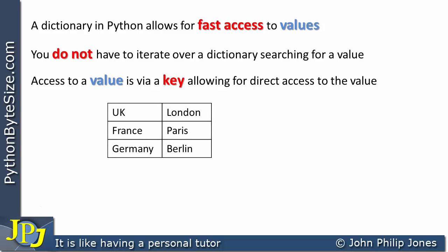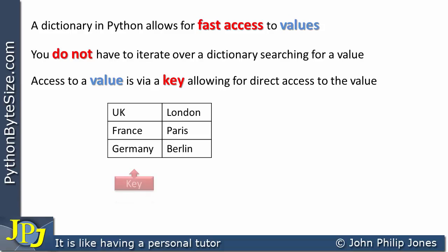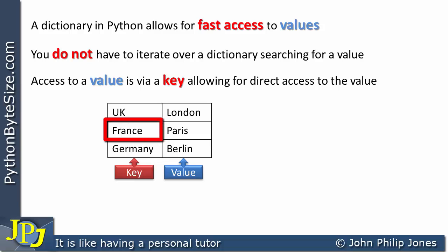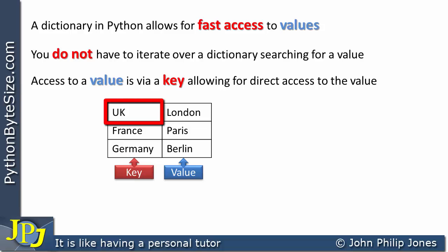Let's consider the following. Here you can see I have a table with two columns and three rows. If we look at this particular column here, you can see it has UK for United Kingdom, France, and Germany, and here it has a value. If I wanted to know what the capital of France was, you go to the key and come across here and you can see that the capital is Paris. If I wanted to find the capital of UK, we locate the UK key and here we can see that the value is London.